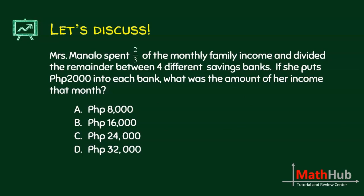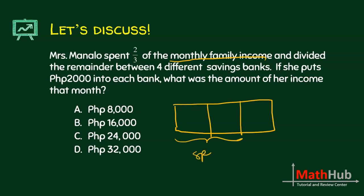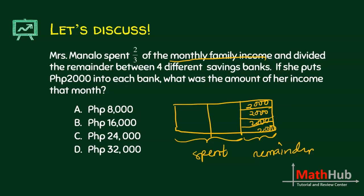Next: Mrs. Manalo spent two thirds of the monthly family income and divided the remainder between four different savings banks. If she puts 2,000 into each bank, what was the amount of her income that month? We represent the monthly family income by the box. Two thirds of it is already spent, and the remainder — one third — is divided into four equal parts for the savings banks, at 2,000 each. So this entire remainder has 8,000 pesos.